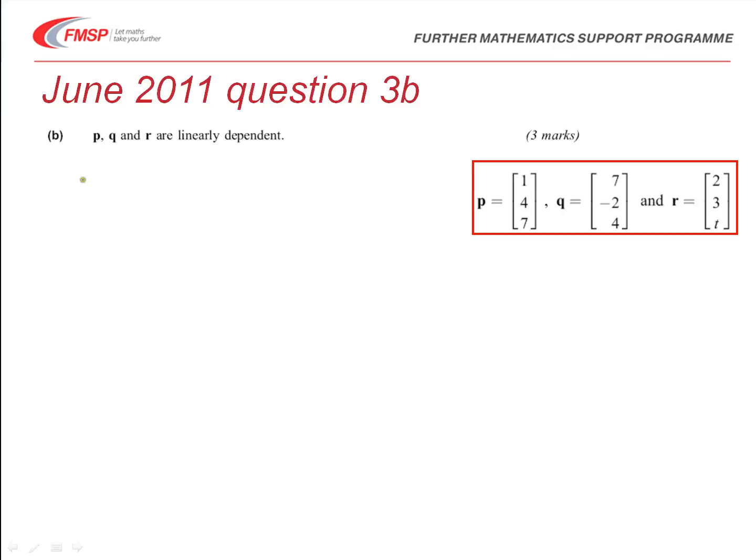Next part of the question then. P, Q and R are linearly dependent, so that means we know that R dot P cross Q - and we know that P cross Q was our vector from the previous part, which is 30, 45, negative 30 - and this has to equal 0, for it to be linearly dependent.